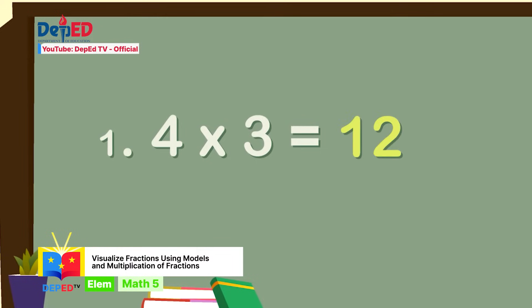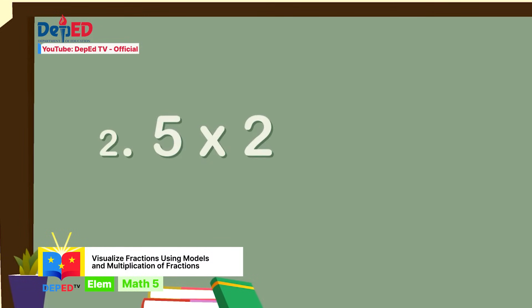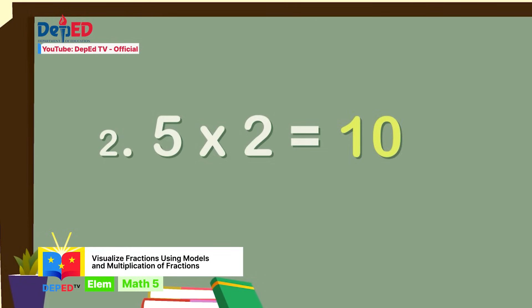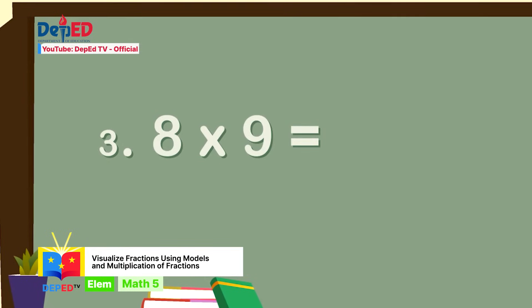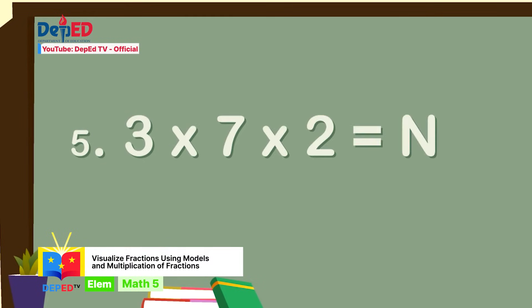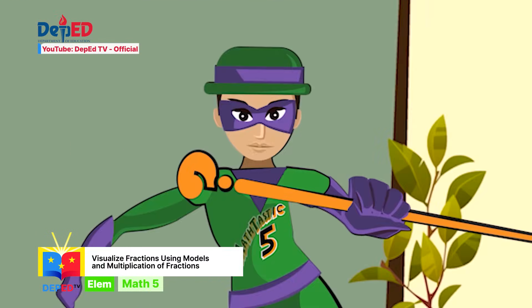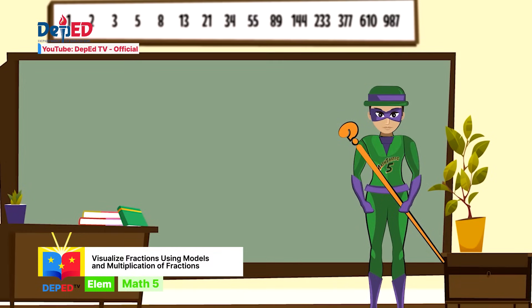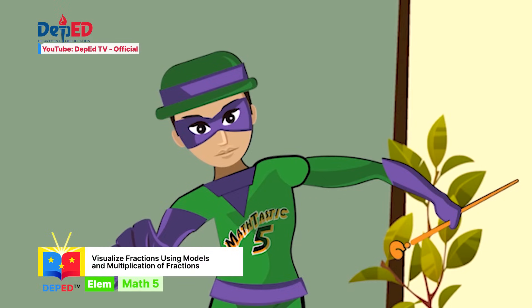The answer is 12. Number two: five times two equals n — the answer is 10. Number three: eight times nine equals n — the answer is 72. Number four: six times one times five equals n — the answer is 30. Number five: three times seven times two equals n — the answer is 42. Great job math heroes! Now I want you to take a look at the pictures and name the fraction for the shaded parts. Are you ready? Let's go.